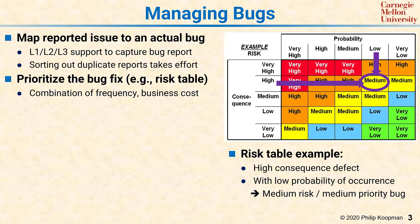Some teams just rate bugs based on the consequence — it crashes the system, therefore we have to fix it — but that doesn't look at context. For example, if a system only crashes when a maintenance technician is doing a very obscure maintenance operation, and the crash is easily recovered and takes maybe 10 seconds to deal with, maybe that's not so bad compared to a crash that happens to ordinary users during production. On the other hand, a moderately low consequence like a misspelling may happen all the time and really annoy users — that misspelling could be a higher risk to the company's success than the crash. Think about what if you spelled the company's name wrong on the startup screen, compared to a crash that happens to one user every thousand years.